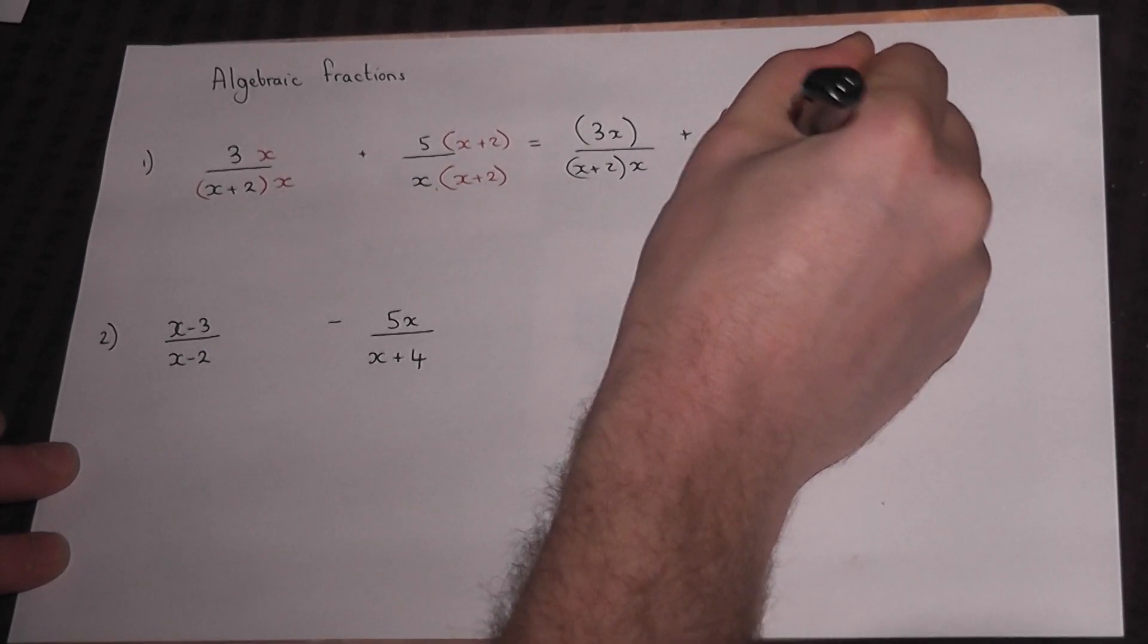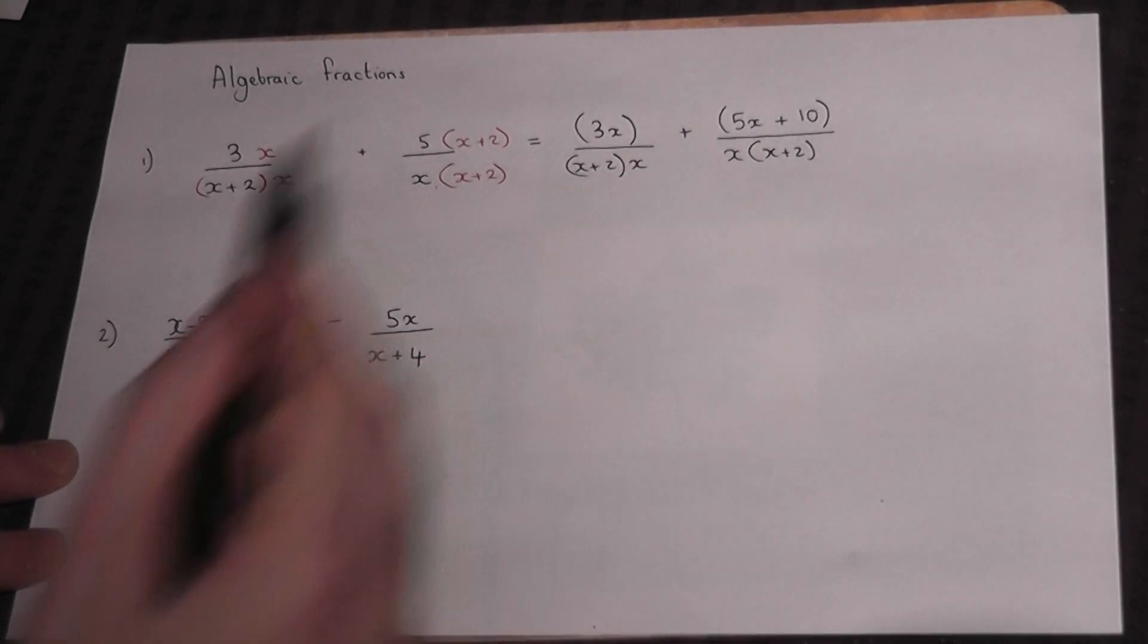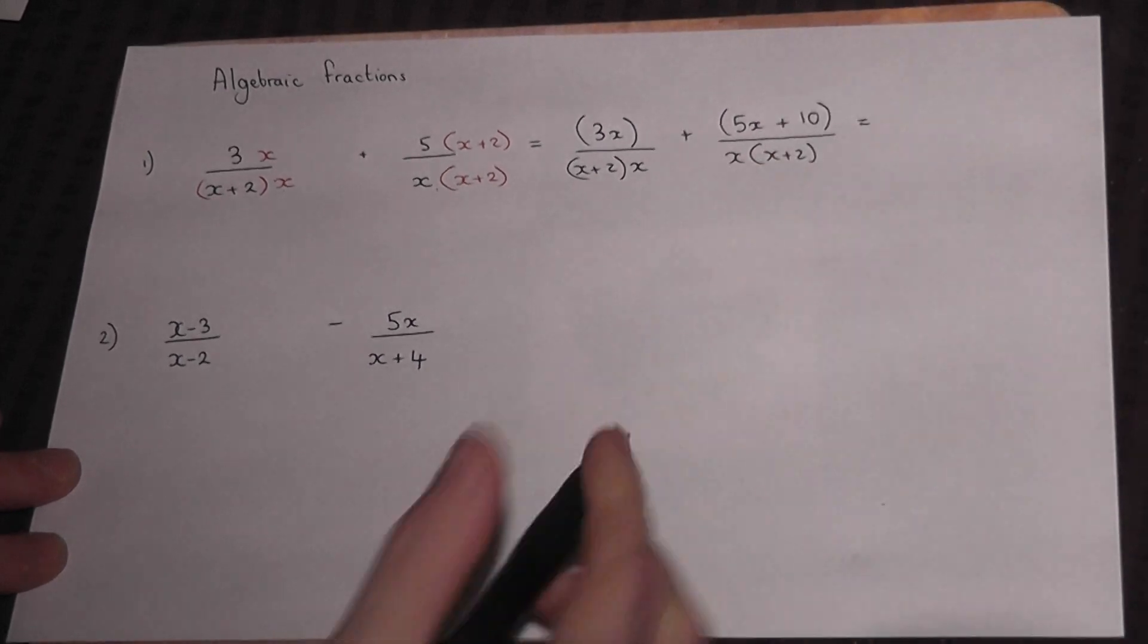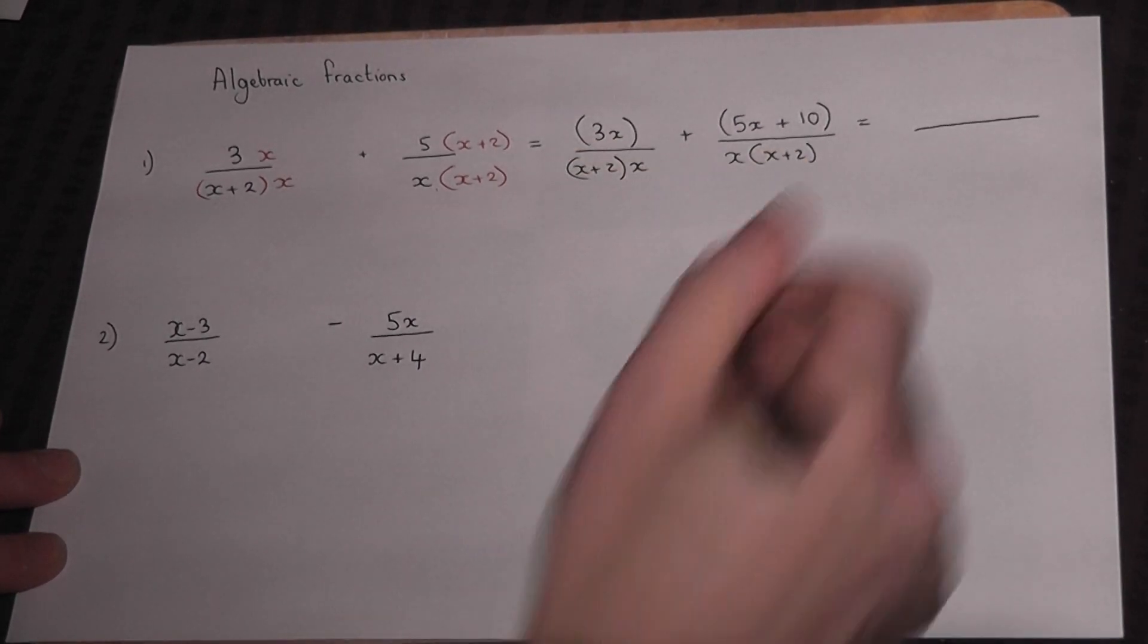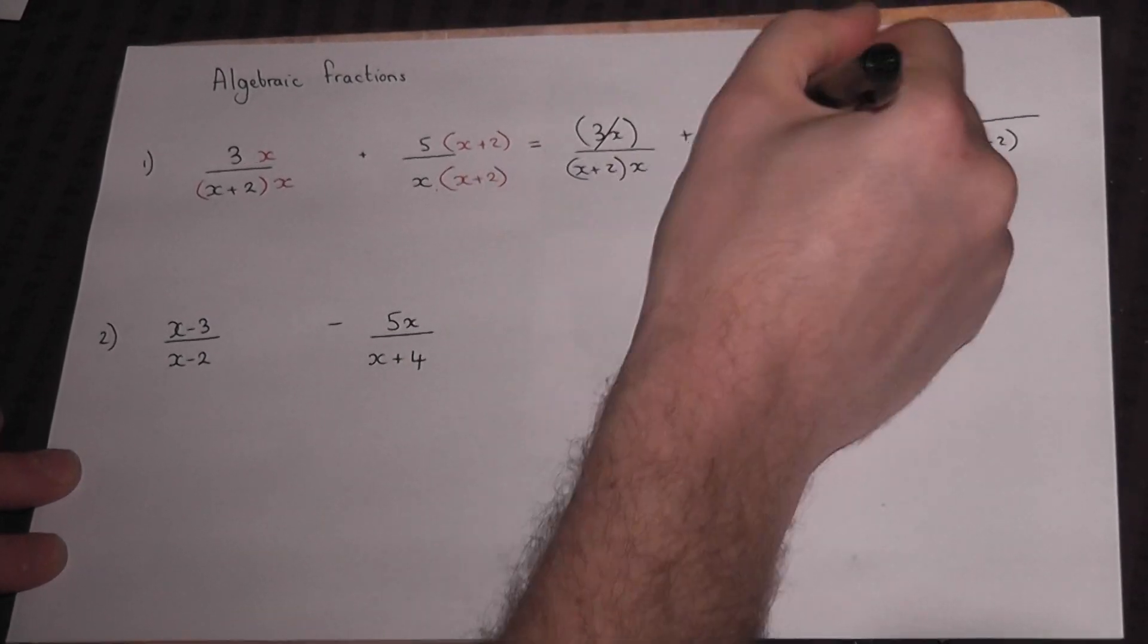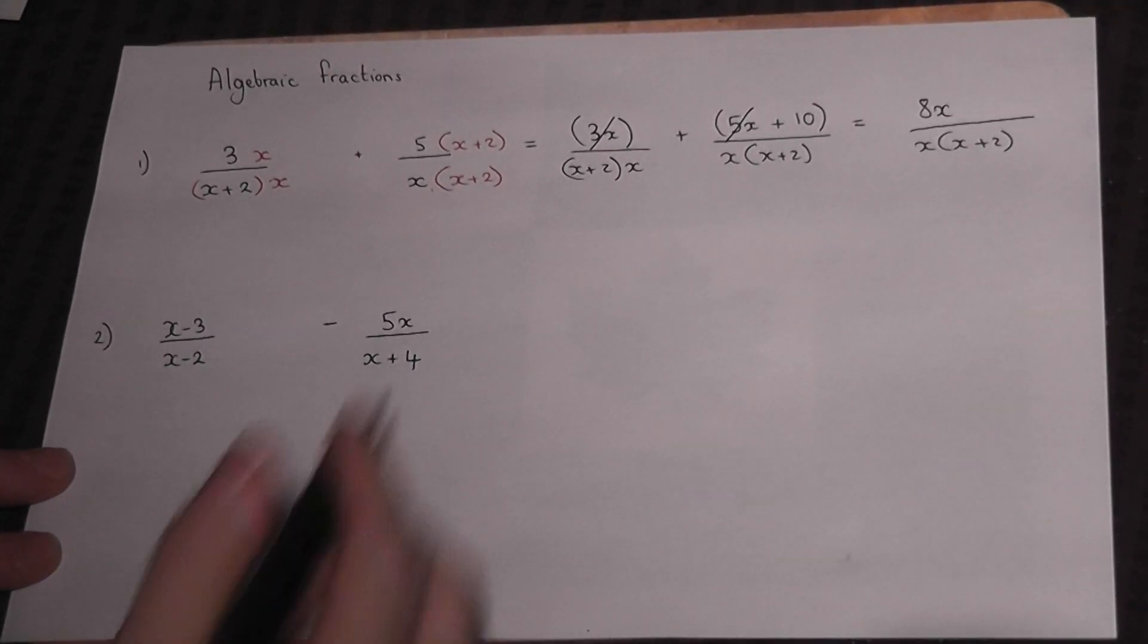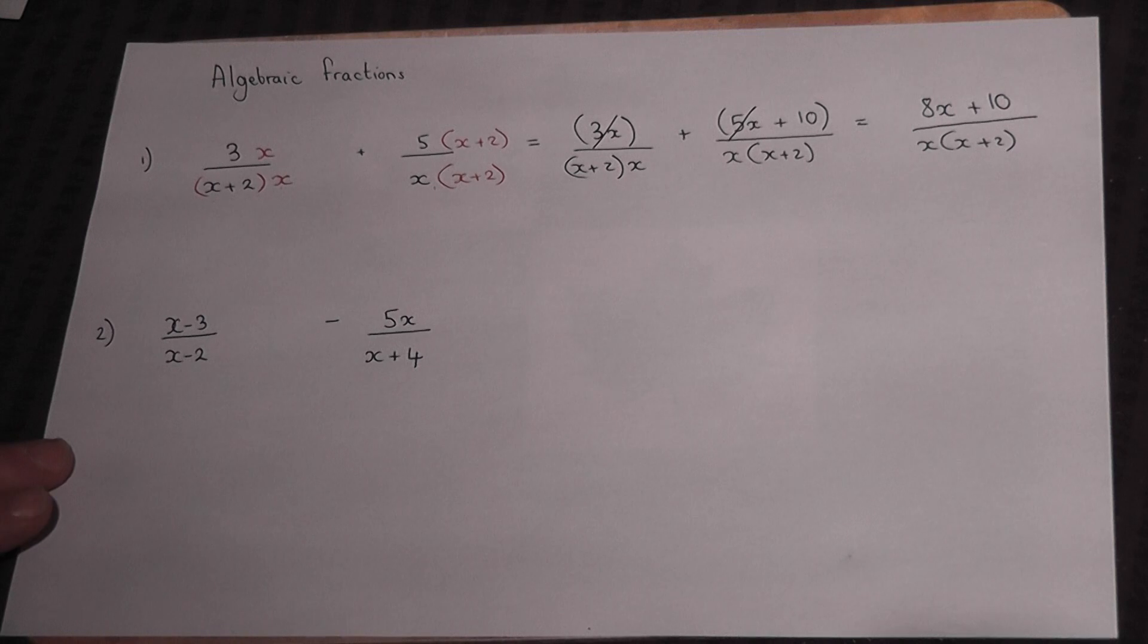This placing in brackets is more important for harder examples but it's worth doing. We now write the denominator down under the fraction. I'll put the x first and x+2 second. We've got 3x and 5x, so we add these terms to get 8x, and then plus 10. That's the answer.